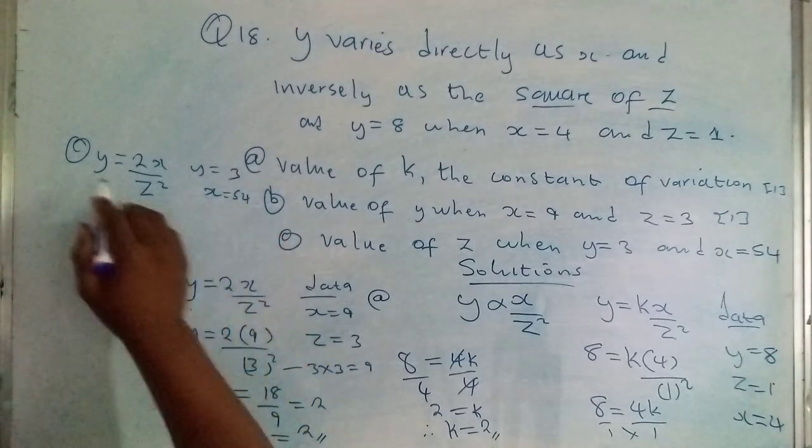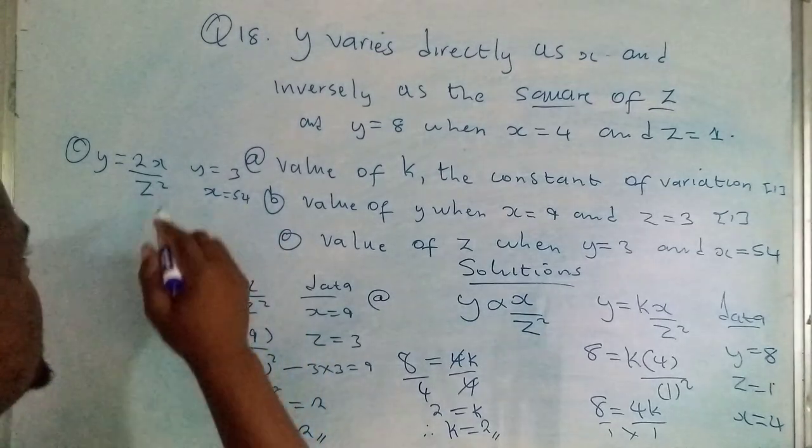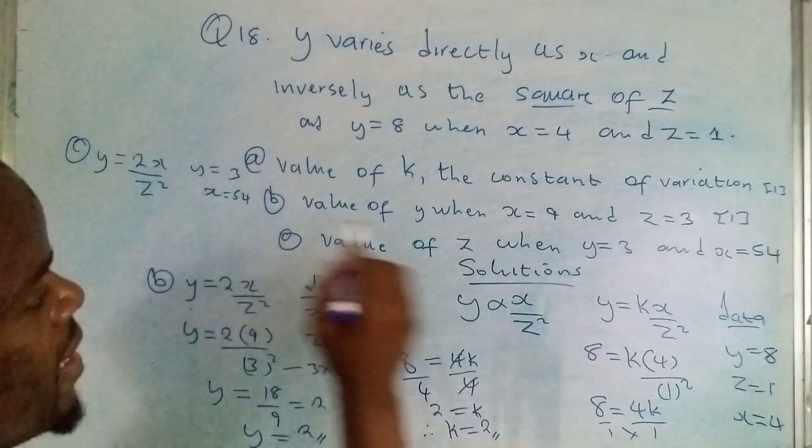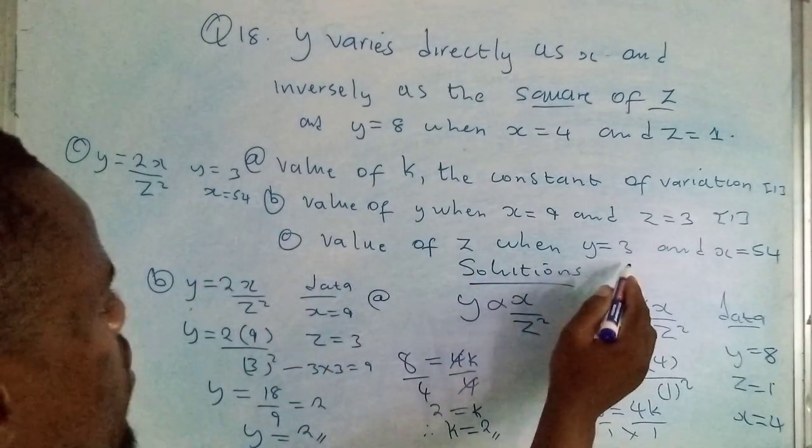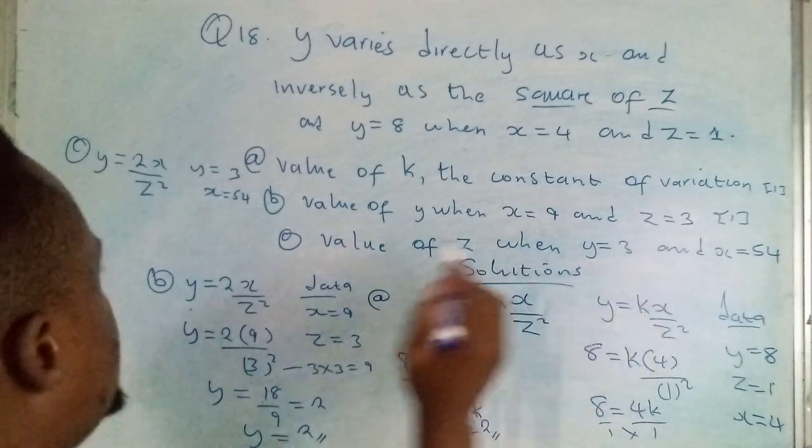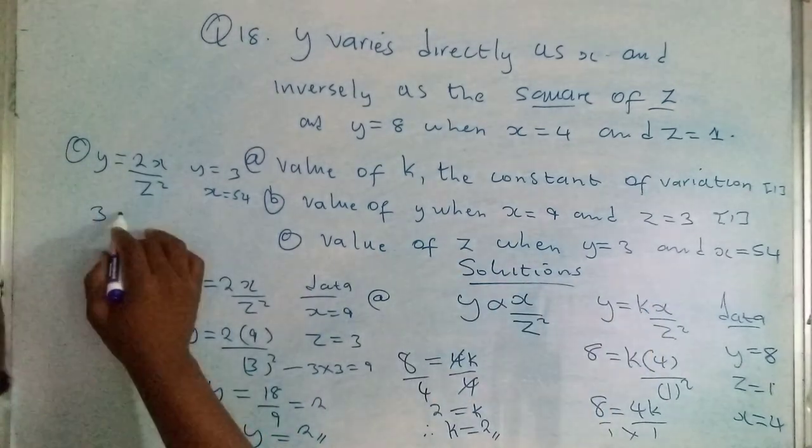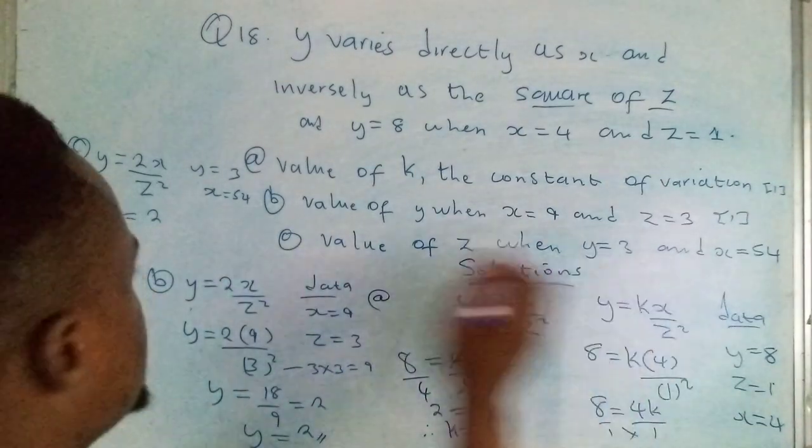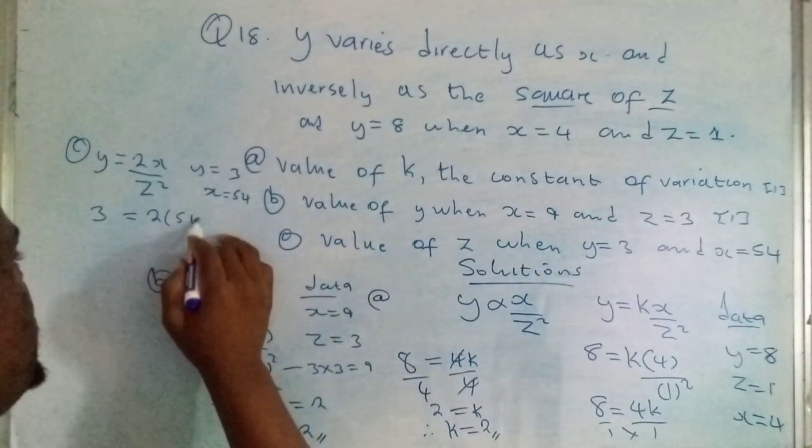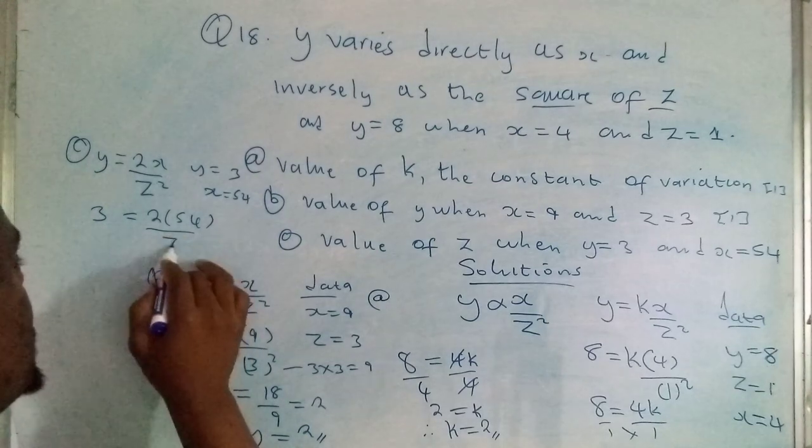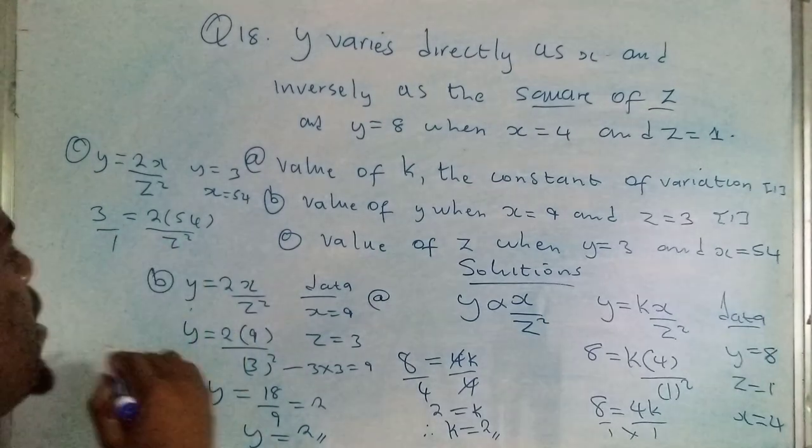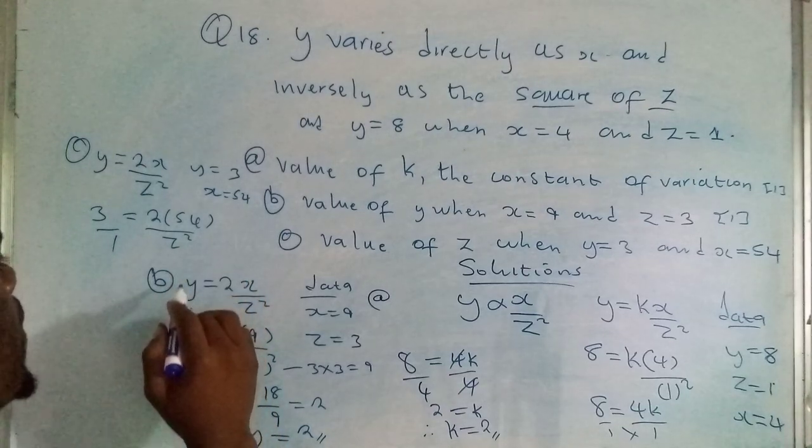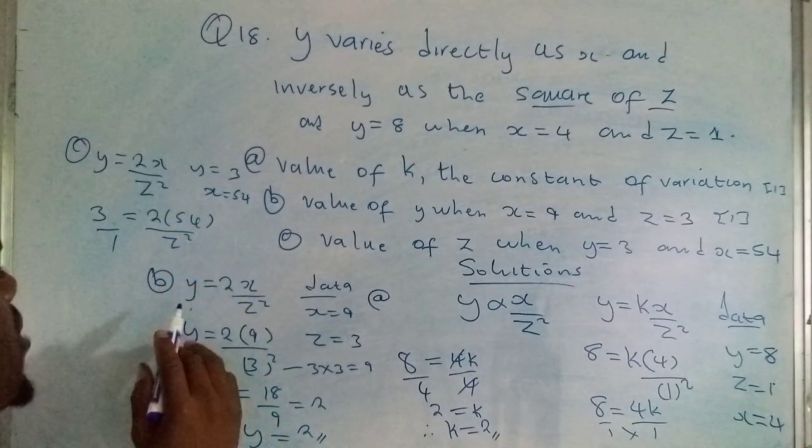We plug in the values. Where there is x we plant in 54, where there is y we write 3. This would be 3 is equal to 2 times 54 over z squared. This is a fraction, we need to get rid of it. But of course we can multiply those so that we find the answers.